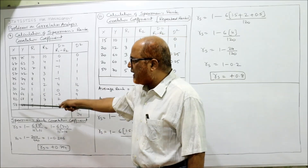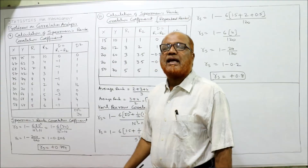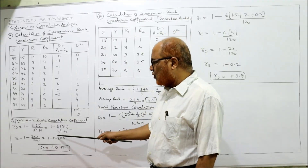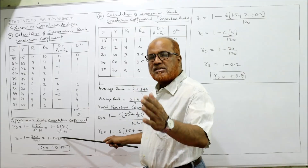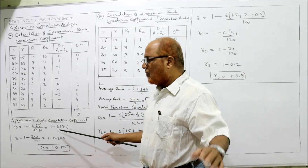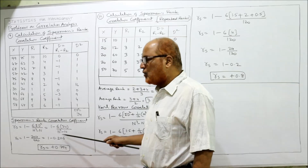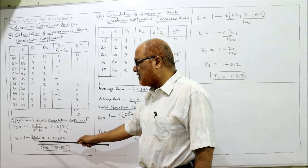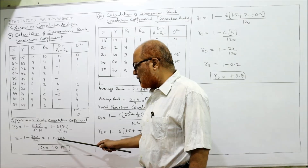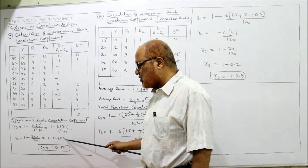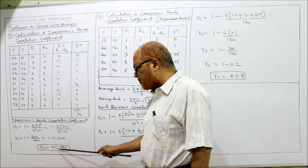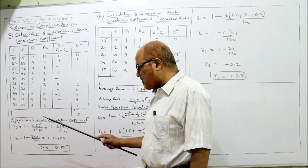From here onwards, the formula for Spearman's rank correlation is: RS = 1 − (6 × ΣD²) / (N³ − N). So RS = 1 − (6 × 34) / (10³ − 10) = 1 − 204 / 990 = 1 − 0.206 = +0.794.